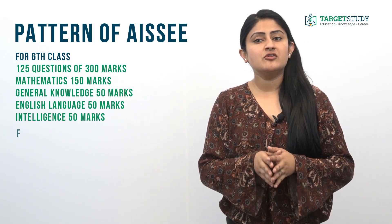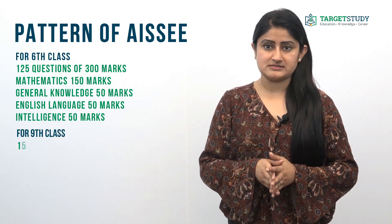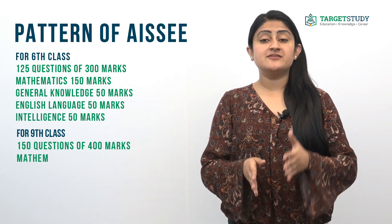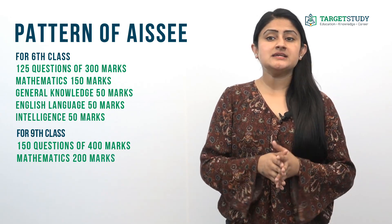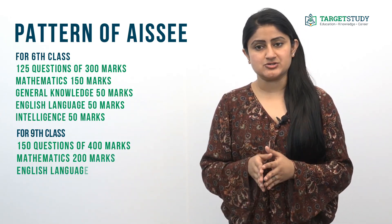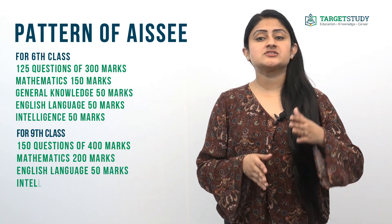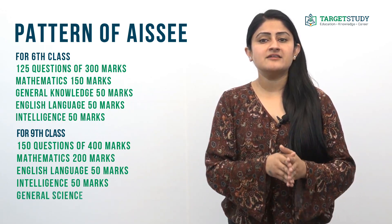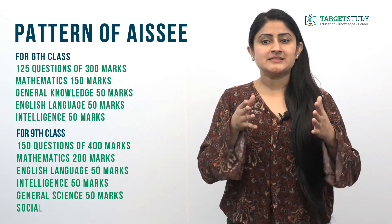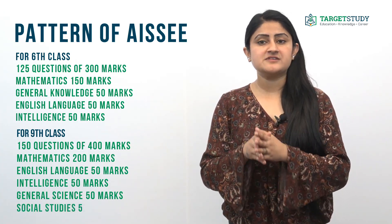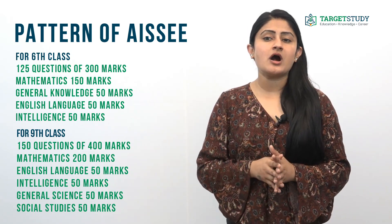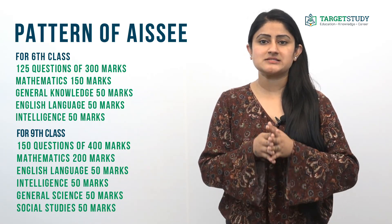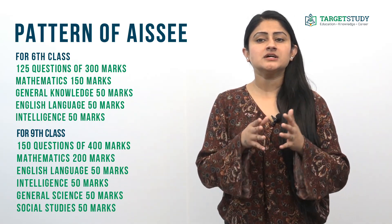The paper for ninth class consists of 150 questions carrying 400 marks. The first paper has four sections: Section A — mathematics — contains 50 questions of four marks each; Section B — English; Section C — general science; and Section D — social studies — each contain 25 questions of two marks each. This part carries 350 marks and must be completed in 2 hours and 30 minutes. The second paper consists of 25 questions carrying two marks each and must be completed in 30 minutes.